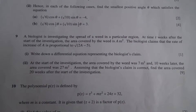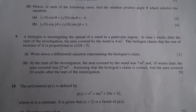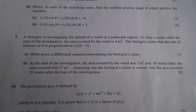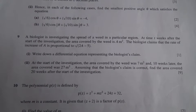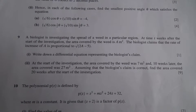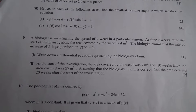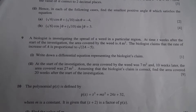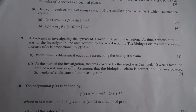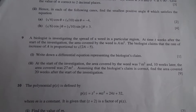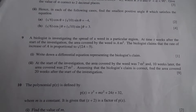For the second part, at the start of the investigation the area covered by the weed was 7 metres squared, and ten weeks later the area covered was 27 metres squared. Assuming that the biologist's claim is correct, find the area covered 20 weeks after the start of the investigation.